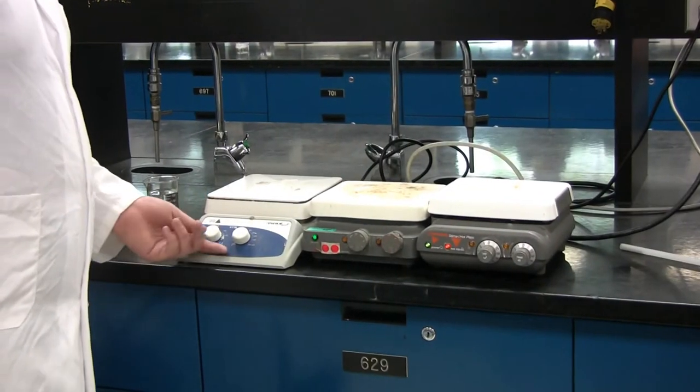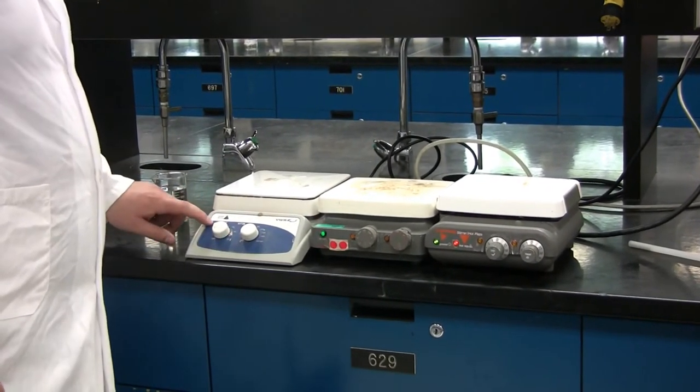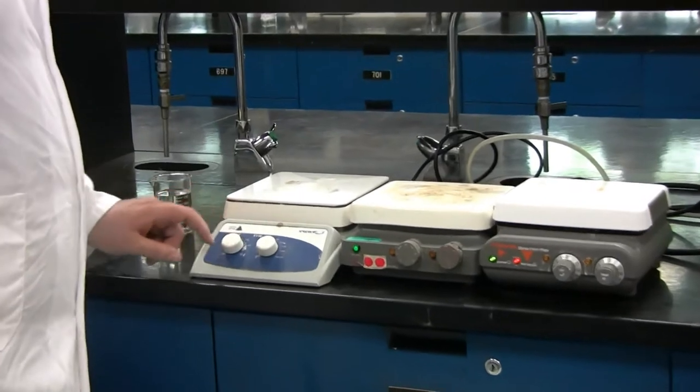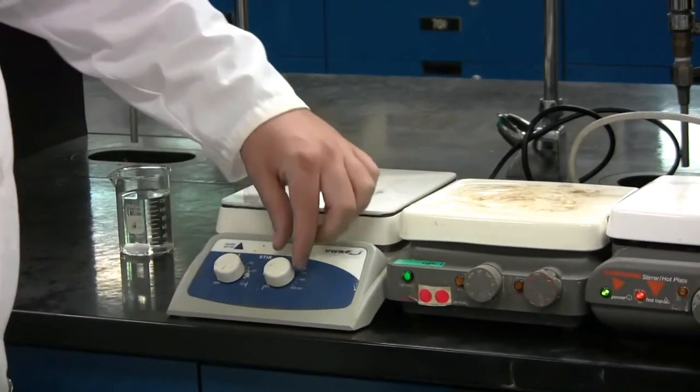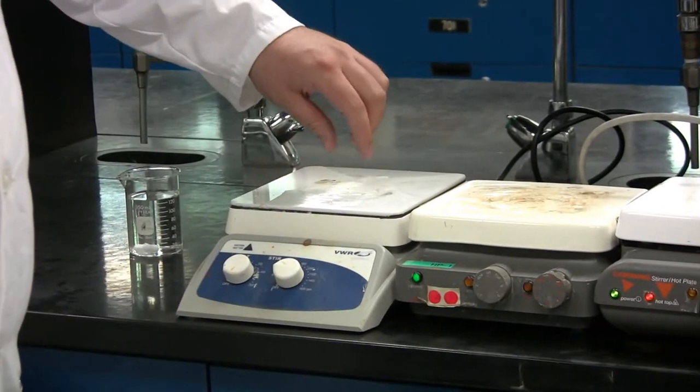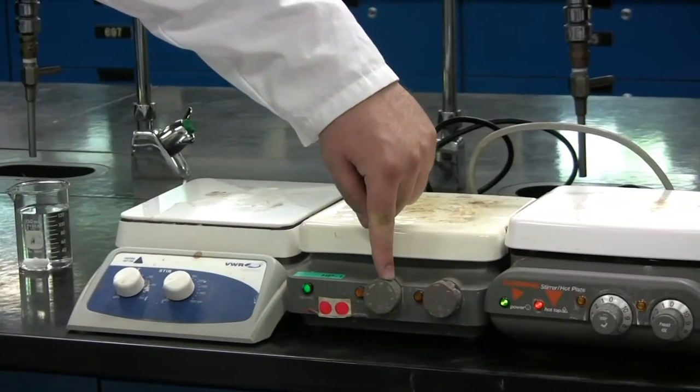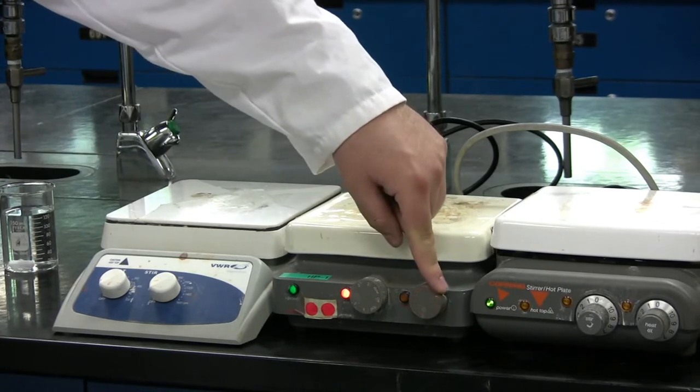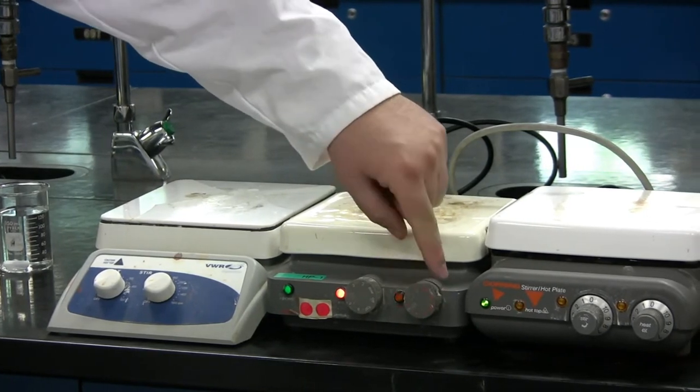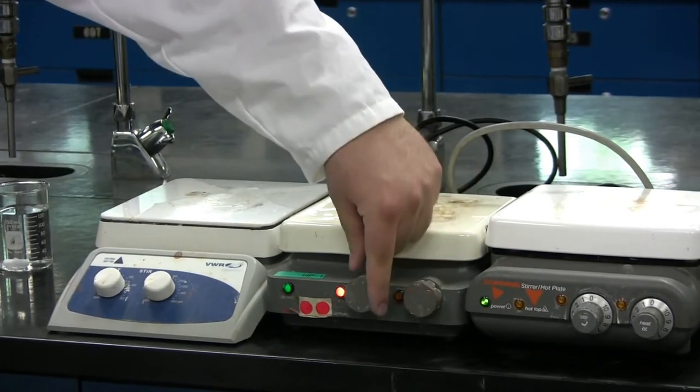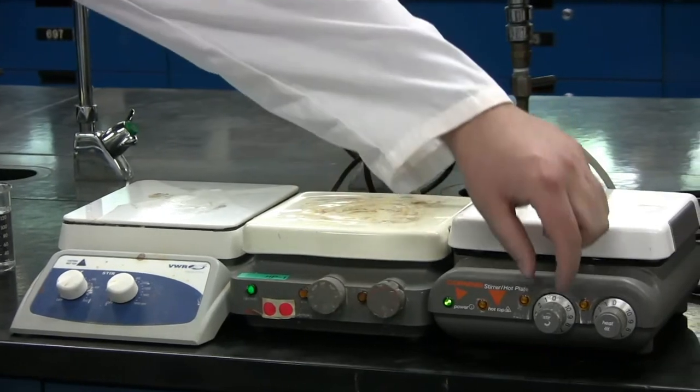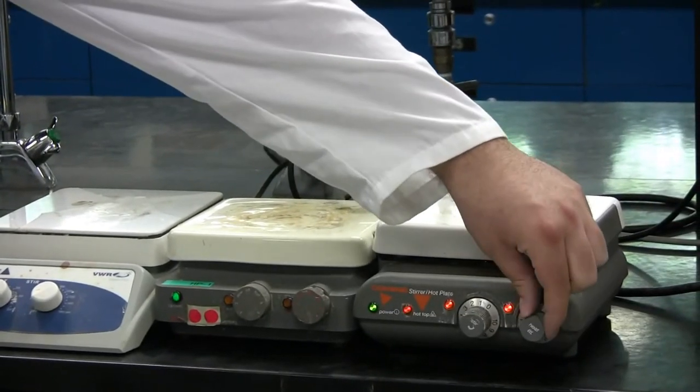There are several different types of hot plates you can encounter in the lab. Be sure to read which dial is for heat and which dial controls the stir bar. You will see that when they are turned on, there will be an indicator light. Usually with the heat there will be a flashing light, and if left plugged in, that will indicate that the top is still hot.